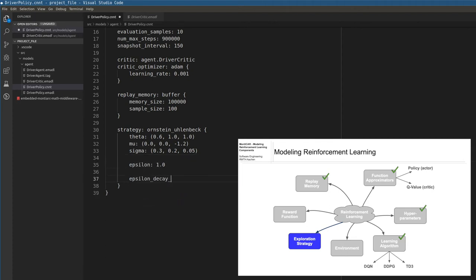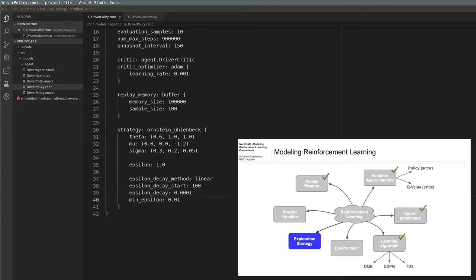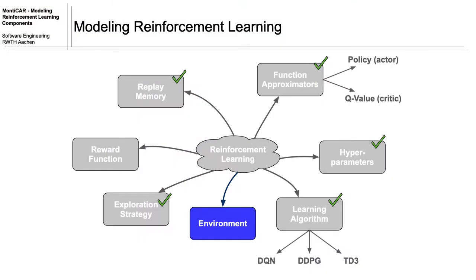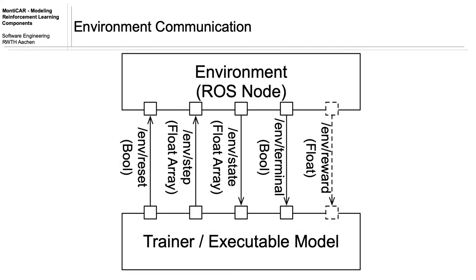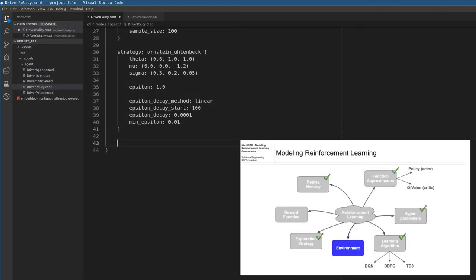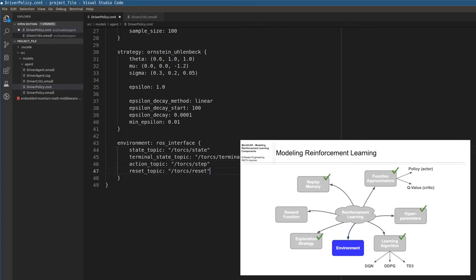We can also configure the starting value of the epsilon parameter. You may want to decrease epsilon over the course of the training. You can configure a linear decrease by determining the episode in which epsilon starts to decrease, the decay rate, and the minimum value. During the training, the agent interacts with an environment, which can be anything from another EMADL model to a simulator or a robot. We require that the environment is controllable through a ROS interface that provides a number of specified topics. The environment requires a topic for resetting the current episode, a topic for sending the current state and terminal flag, and a topic for receiving action vectors from the agent. We provide a mapping of the topic names to the particular interface functions in the configuration model.